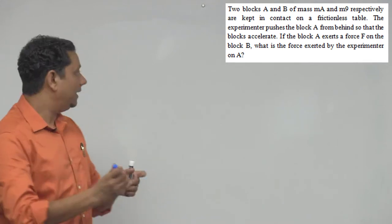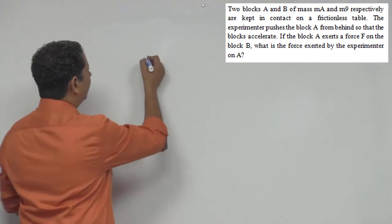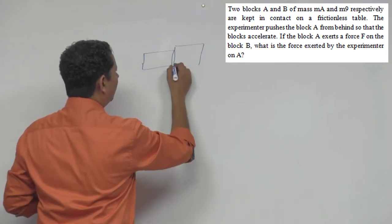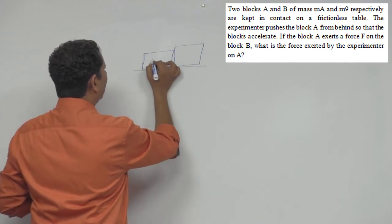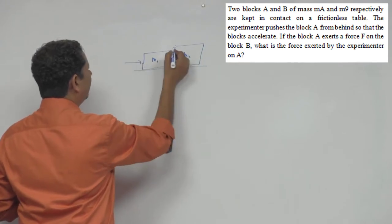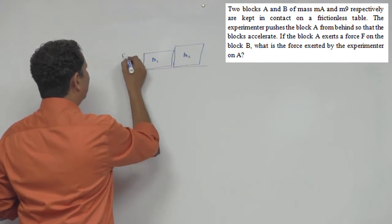Again, NLM ka simple sawal hai. So scenario yeh hai ki yeh aapka block A, yeh aapka block B, dono contact me aise rakhe huye hai. So iska mass M1 hai, iska mass M2 hai, aur aapne yahan se ek force, let's say F lagaya hai, F1.